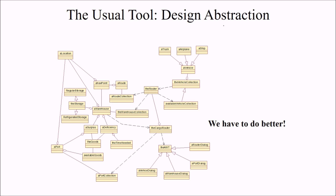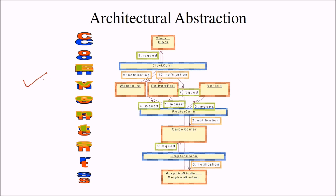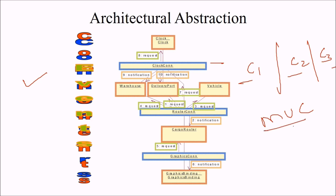The usual tool is design abstraction. We can abstract various layers, and on a figure or plain paper, the system becomes understandable. We need architectural abstraction first — defining components and their interrelationships. For example, you might use an MVC (model-view-controller) architecture or a 3-tier architecture. All these need to be defined.